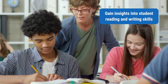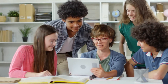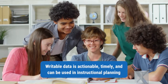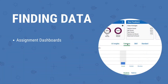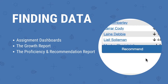Teachers and school leaders can gain insights into student reading and writing skills by using Writable's data and reporting tools. The data you'll see is actionable, timely, and can be used in your instructional planning. You'll find helpful data in three locations across Writable: in assignment dashboards for insights into how students are performing on a single assignment, in the growth report for insight about growth over time between two assignments or assessments, and in the proficiency and recommendation report where you'll see insight on student performance by group with recommended tasks and assignments to support students on skills they may be struggling with.